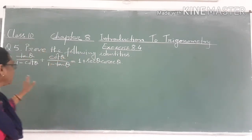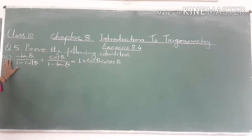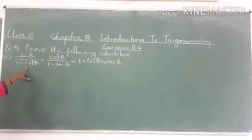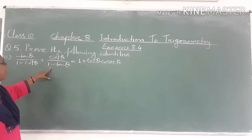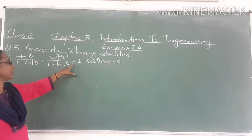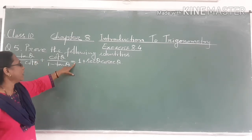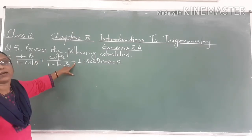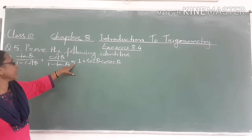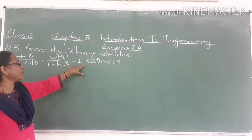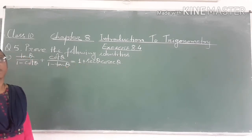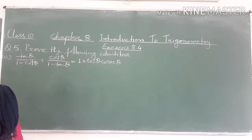This is the 5th question. We have tan θ upon 1 minus cot θ, plus cot θ upon 1 minus tan θ, equal to 1 plus sec θ into cosec θ.